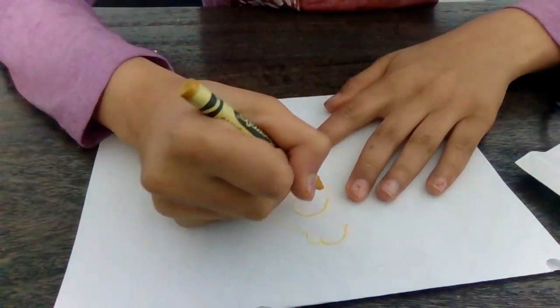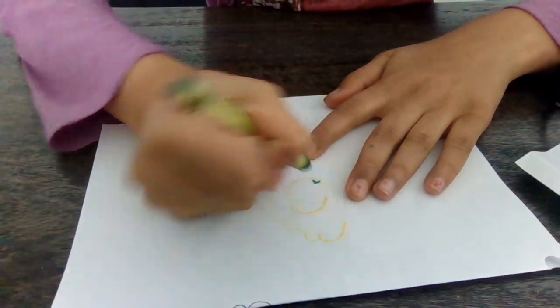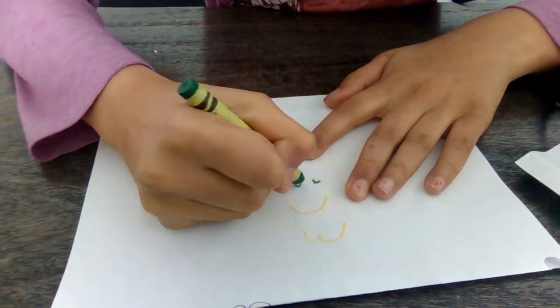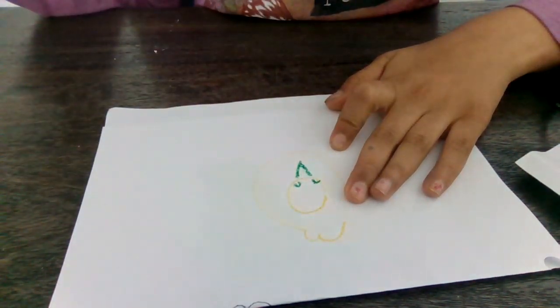And then with a green crayon, draw two eyes looking down and a beak.